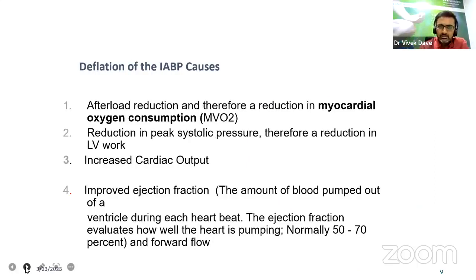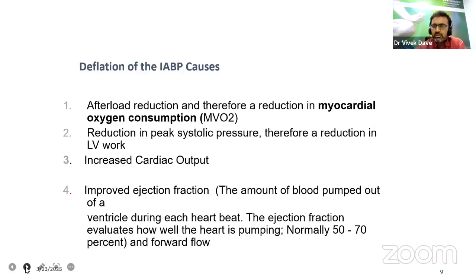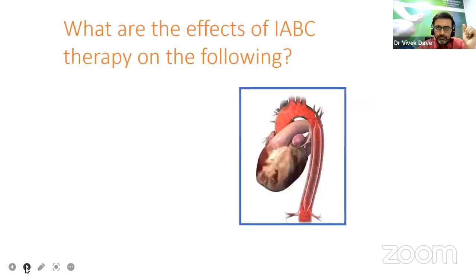When IABP deflates and the heart contracts, it causes afterload reduction and therefore reduces myocardial oxygen consumption, reduction in peak systolic pressure, reduction in LV work, increases cardiac output, and eventually improves the ejection fraction. These are the effects of intra-aortic balloon counter-pulsation IABP therapy.